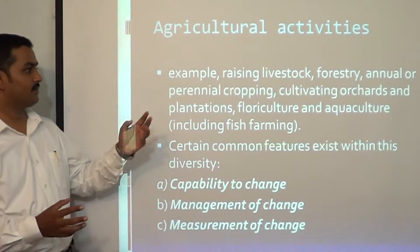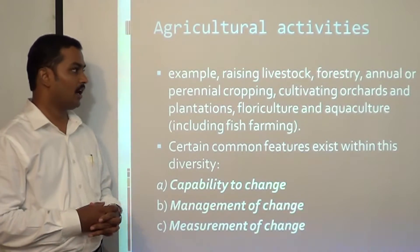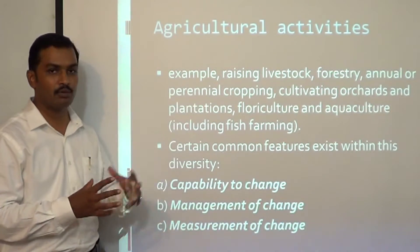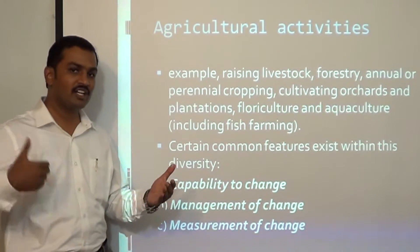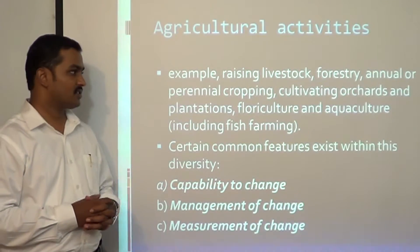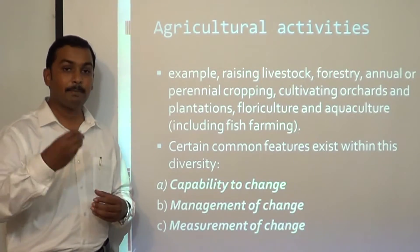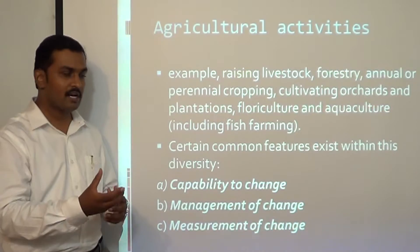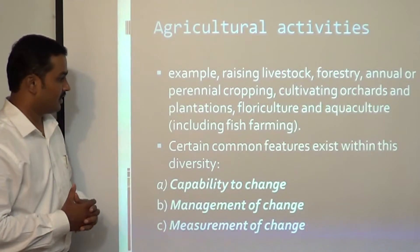What are examples of agricultural activities? Raising of livestock, forestry, annual or perennial cropping. Annual cropping includes wheat, maize, and rice crops. Perennial cropping means you sow a seed and continue to get a crop for a long period of time. Other examples include cultivating orchards like wine or apple farms, pine and timber plantations, floriculture — agriculture relating to flowers — and aquaculture, including fish farming.